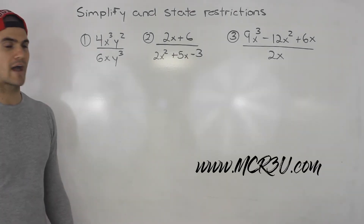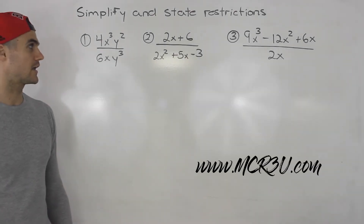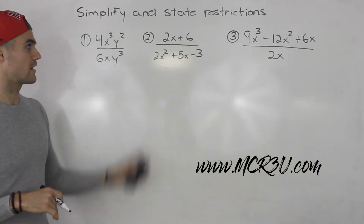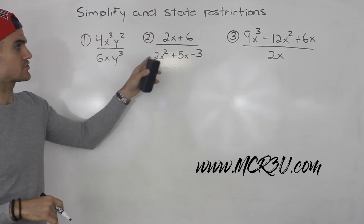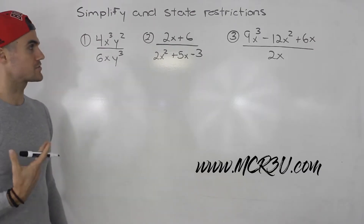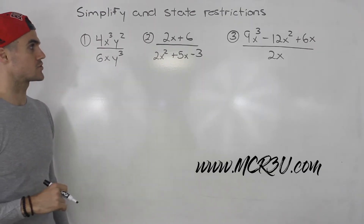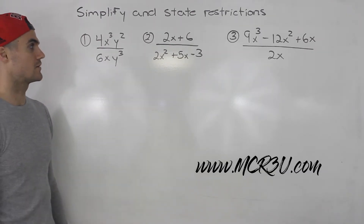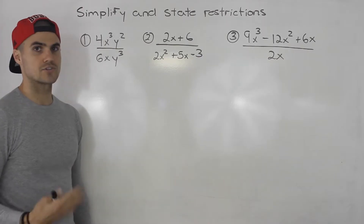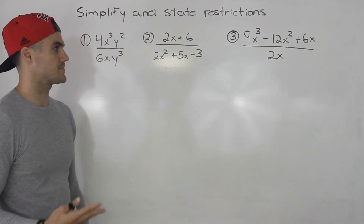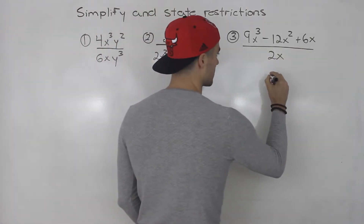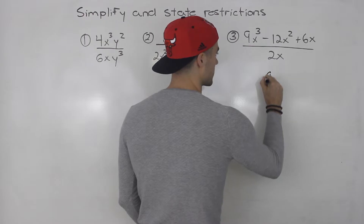What's up everybody? Welcome back. Patrick here. In this question, we have three rational expressions that we have to simplify. We also have to state the restrictions on variables. When simplifying rational expressions, I like to follow a three-step process.